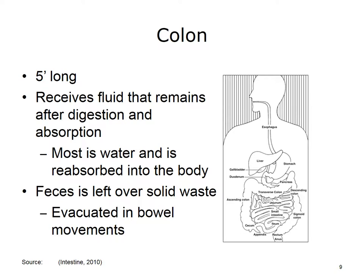After the small intestine comes the large intestine, or large bowel. The large intestine includes the colon, which is approximately 5 feet long. Any fluid that remains after digestion and absorption enters the colon. The fluid is mostly water and is reabsorbed into the body. The solid waste left over is called feces and is evacuated from the body by bowel movements. The colon travels through all four quadrants of the abdomen, and its sections include the ascending colon, the transverse colon, the descending colon, and the sigmoid colon.